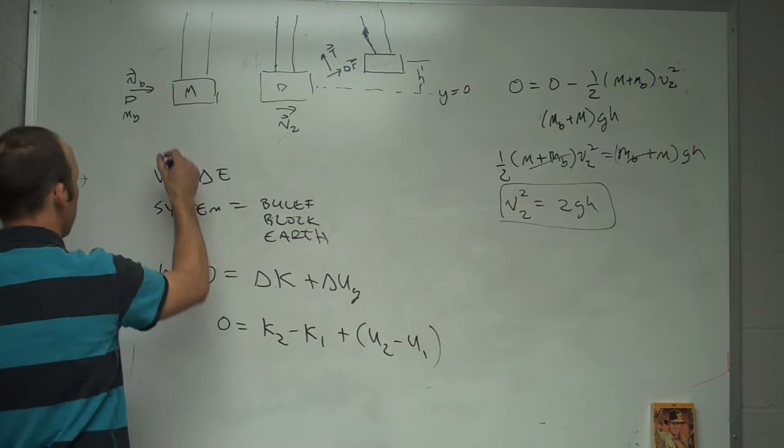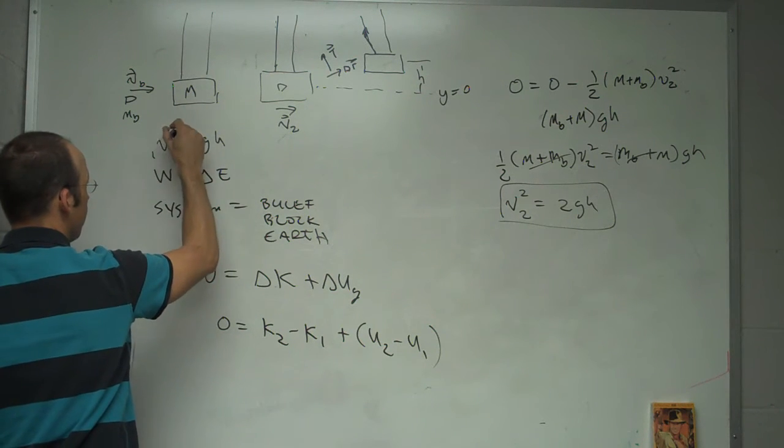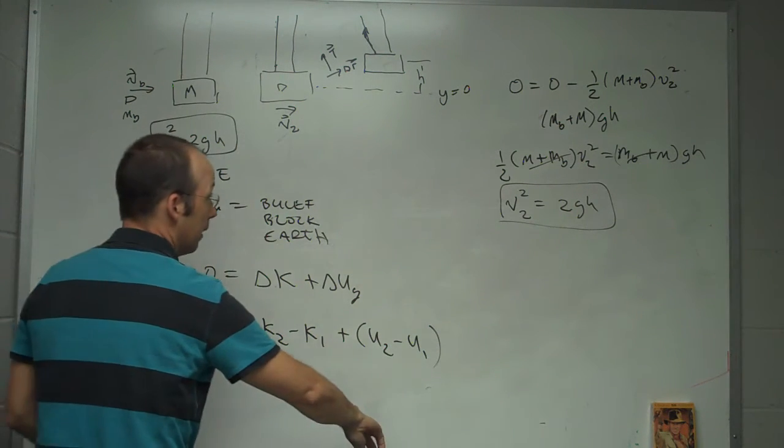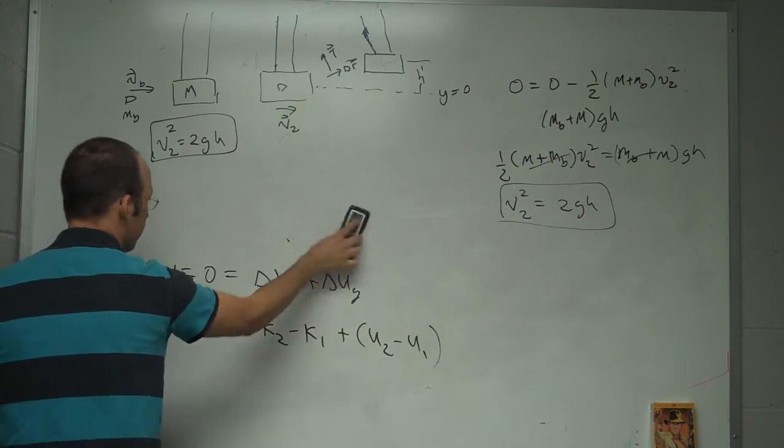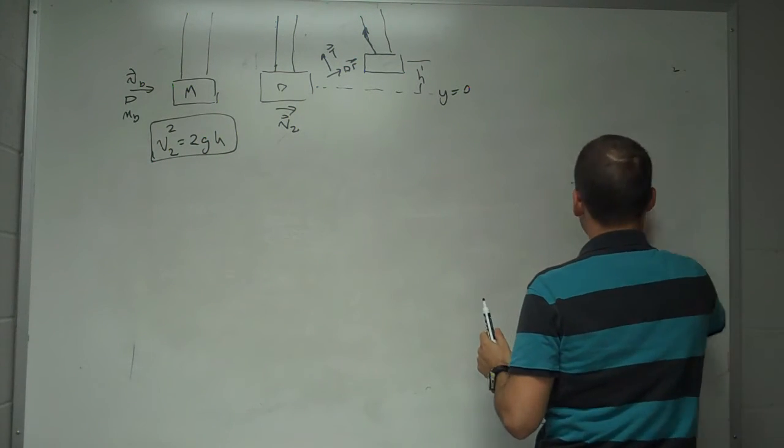Let me write that over here. So V2 equals 2GH. V2 squared. Now I'm going to erase what I did so I can do something else.